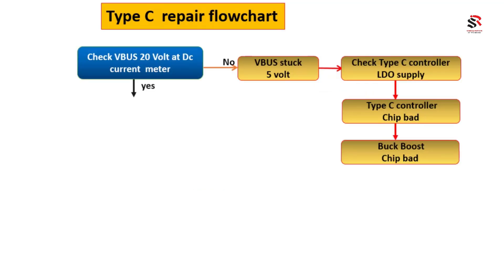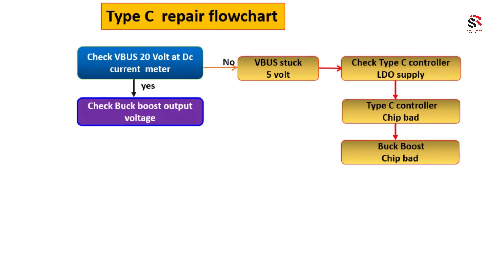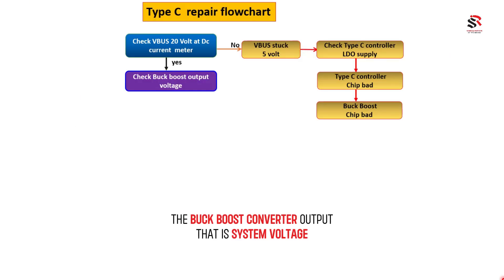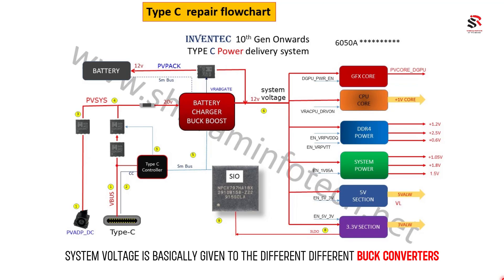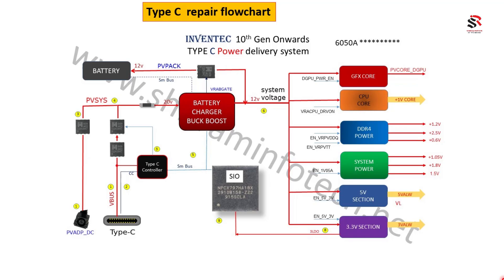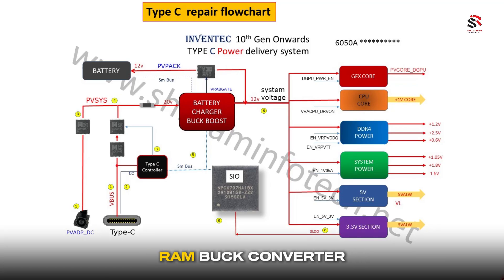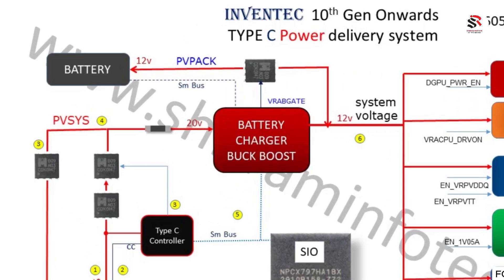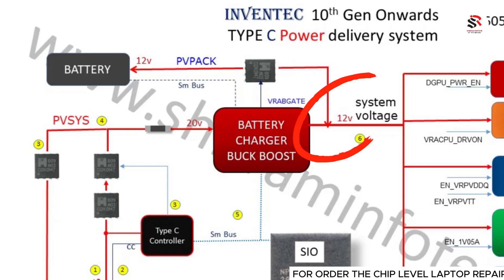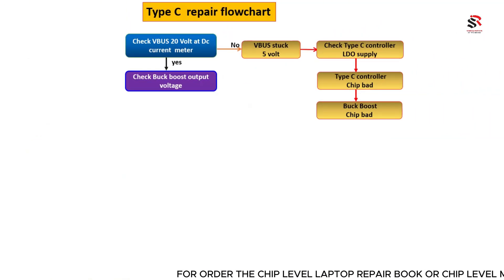If 20 volts is present on the VBUS, the next thing to check is the buck-boost converter output, which is the system voltage — somewhere around 12 to 13 volts depending on the model. This system voltage is fed to different buck converters: 3.3V, 5V, RAM buck converter, PCH buck converter, and the CPU/SOC voltages. The same voltage also goes to the battery.